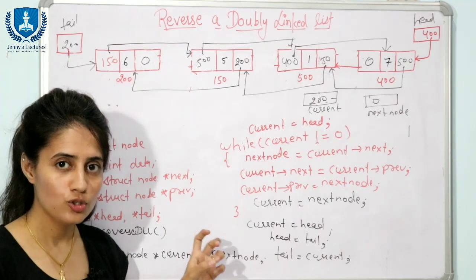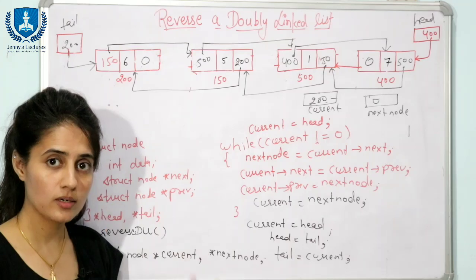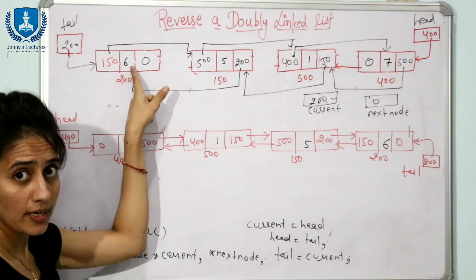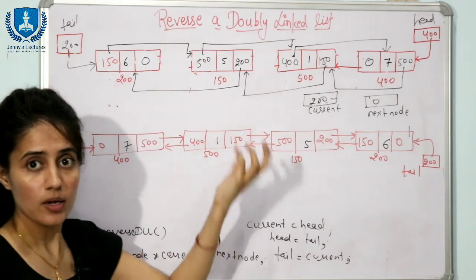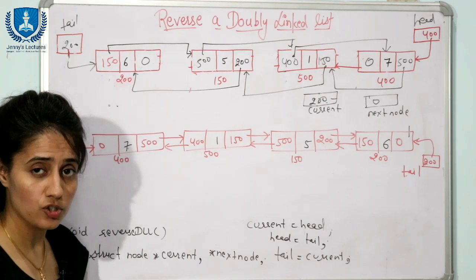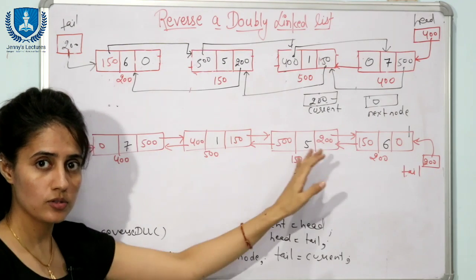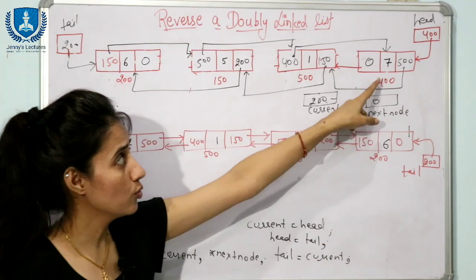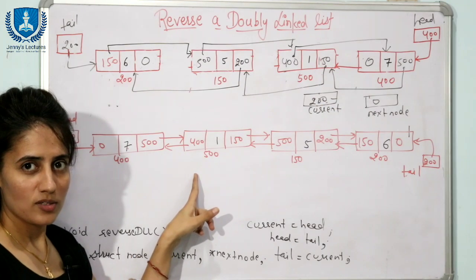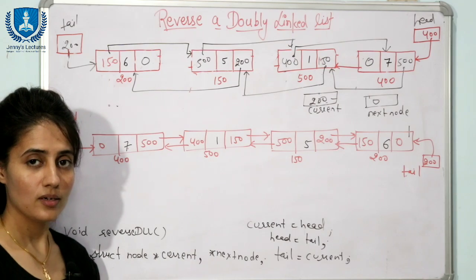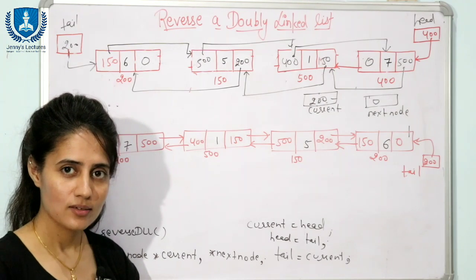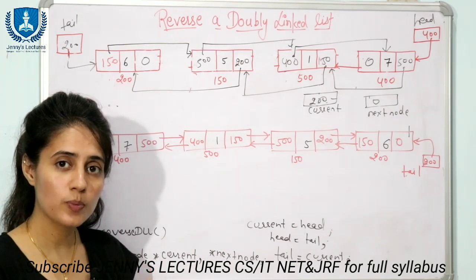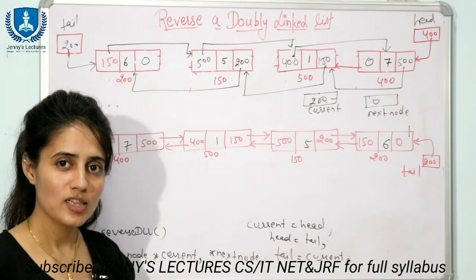This was the iterative approach to reverse a doubly linked list. Using recursion we can also reverse the list. After reversing, if you call the display function, it should print the nodes in reverse order: 7, 1, 5, 6 — which is the reverse of the original 6, 5, 1, 7. In the next video, we will implement a circular linked list — how to create one and display its contents. Till then, bye bye, take care.